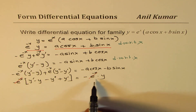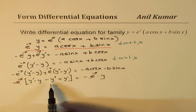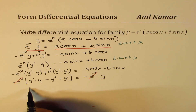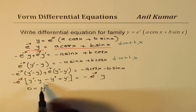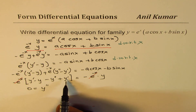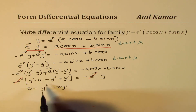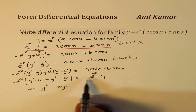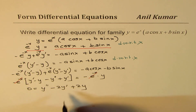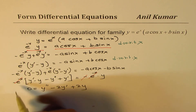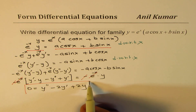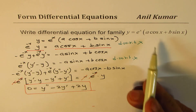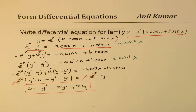On the left side, taking -e^(-x) common: -e^(-x)[(y' - y) - (y'' - y')] = -e^(-x)·y. Cancelling e^(-x) terms, bringing to one side: y'' - 2y' + 2y = 0. This is the differential equation representing y = e^x(a cos x + b sin x).